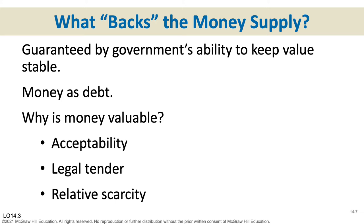When we think about what backs the money supply, in the olden days — like the mid-1900s — we moved away from gold backing the money supply. There used to be enough gold in Fort Knox to back every dollar, but the economy grew and there's simply not enough gold to back our money supply anymore. So now our money is really only backed by your belief that the federal government will have responsible fiscal and monetary policies to keep the value of the dollar stable.